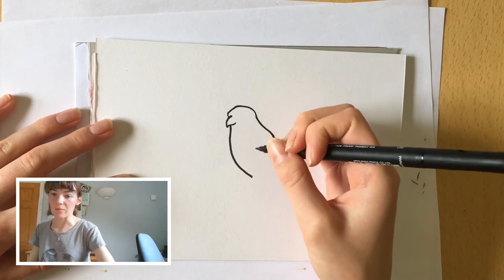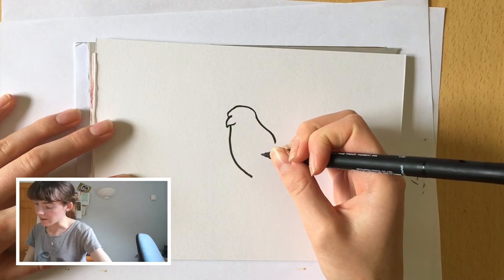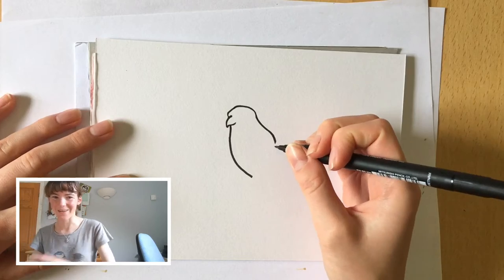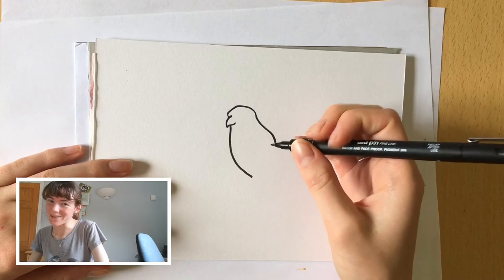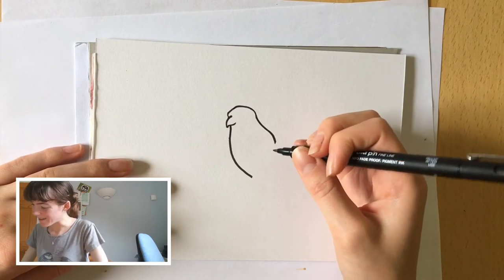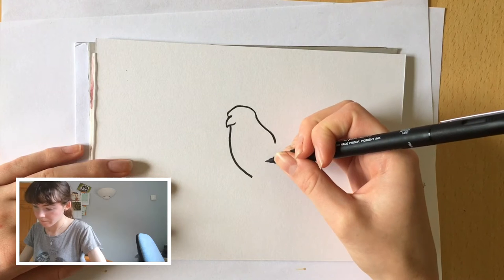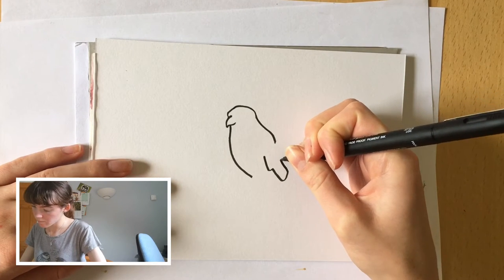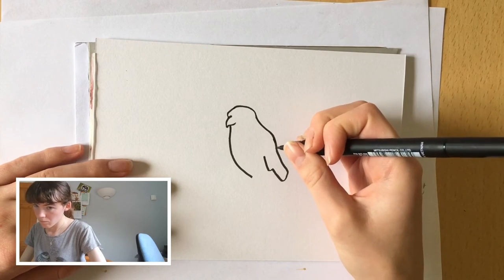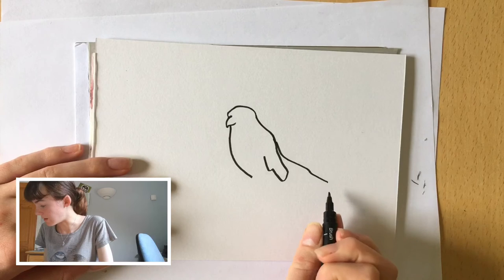And then about at this point we want to do the feathers of the falcon. So the best way to describe how to do this is going to be a bit like fingers. But it might be easier to refer to the picture. So I'm just going to try and do the outline anyway. And these are the tail feathers.